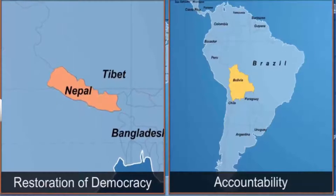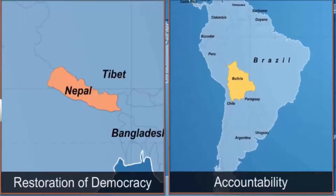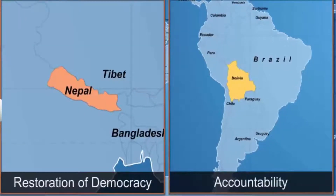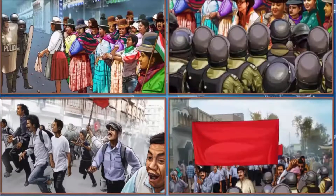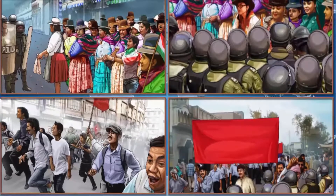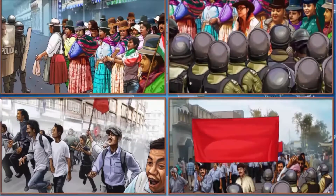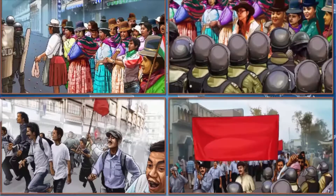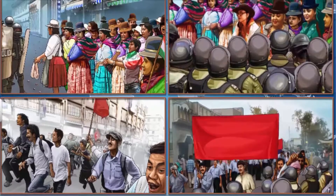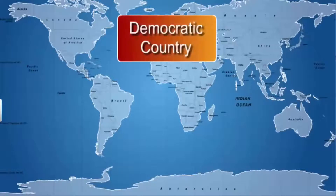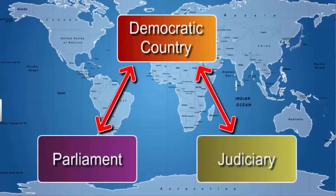As we have seen through these examples, the movement in Nepal was to establish democracy, while in Bolivia it involved accountability of a democratically elected government. The similarity in these movements was that political conflict was the cause of these struggles. Both involved mass mobilization and the critical role of political organizations. In a democratic country, conflicts are usually resolved by existing institutions like parliament or the judiciary.